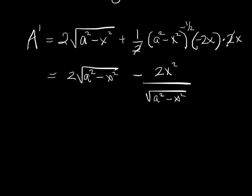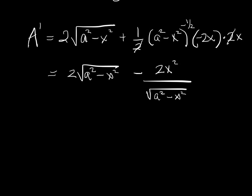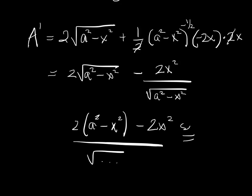So, standard maneuver here, commonly denominate, and that's going to give us 2 A squared minus x squared minus 2x squared over a denominator we don't care about anymore. So, we've got to set that equal to 0.